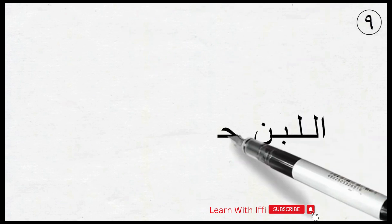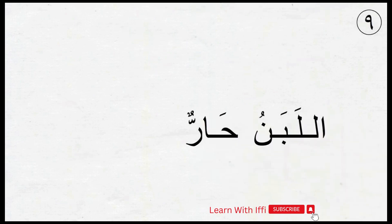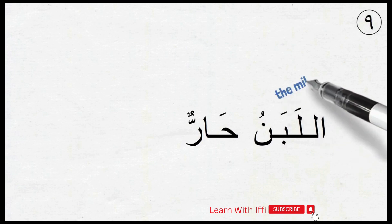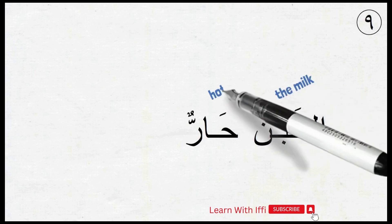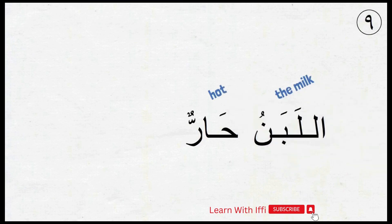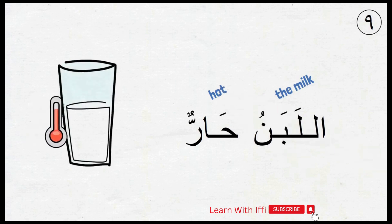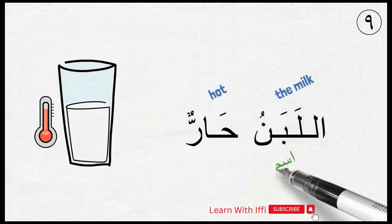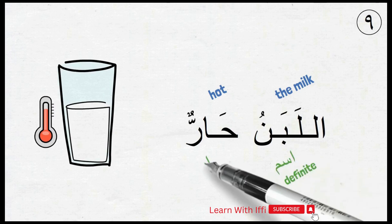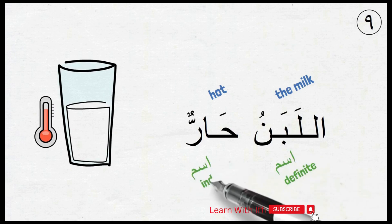Next sentence: أَلَّبَنُ حَارٌ. Here, أَلَّبَنُ means 'the milk' and حَارٌ means 'hot.' So the sentence is saying: the milk is hot. أَلَّبَنُ is definite ism and حَارٌ is indefinite ism.